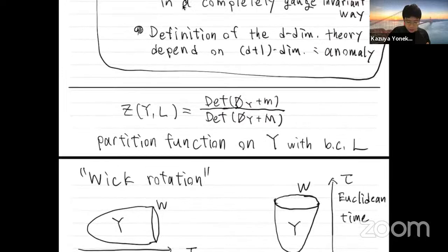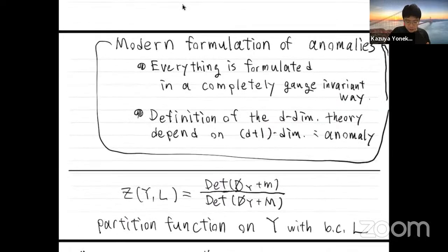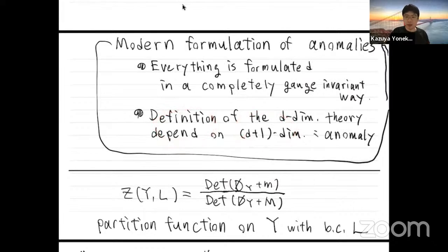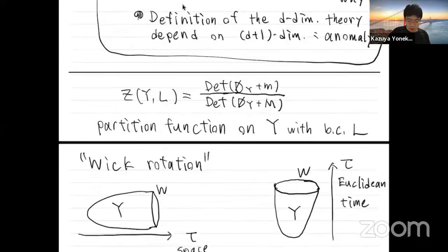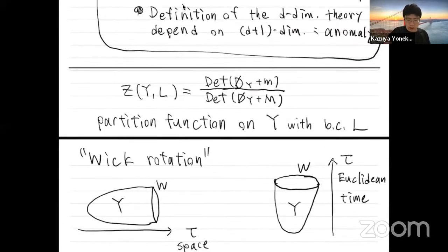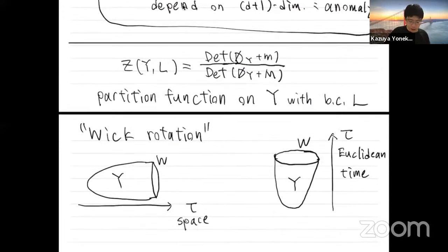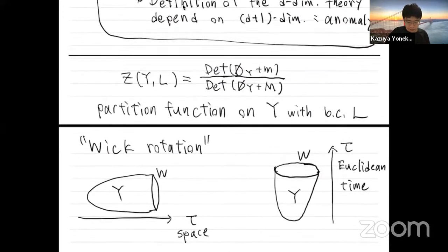Everything is completely gauge-invariant, but the definition of the d-dimensional chiral fermion theory may depend on the d+1-dimensional bulk, and that is the modern interpretation of the anomaly. Today I want to discuss this dependence on the d+1-dimensional bulk more explicitly. The result turns out to be given by the Atiyah-Patodi-Singer eta invariant.